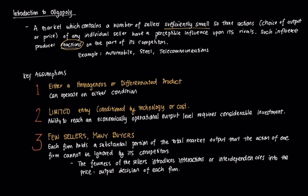In contrast, a monopolist doesn't adjust for anyone because it's the only firm in the market. In a perfectly competitive market, if a firm tries to deviate from equilibrium, that firm will lose everything and stand to gain nothing, because each firm has no individual power. In an oligopoly, each firm does have some form of influence, and that will trigger reactions from the other firms inside the oligopoly.